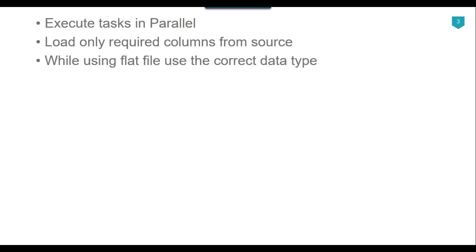While using a flat file source, use the correct data type. When we create a flat file connection manager, SSIS by default assigns the string 50 data type to every column unless you modify it. You should give the correct data type and the correct length for each field, because it saves space and time to execute the overall SSIS package.